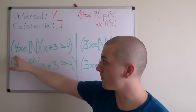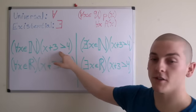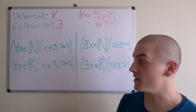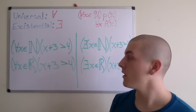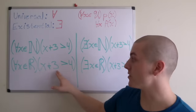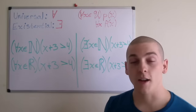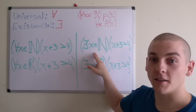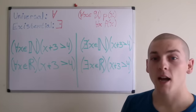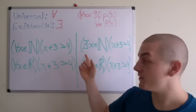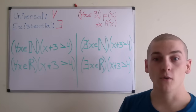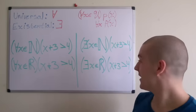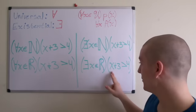So looking at examples: 'for every X that is an element of the naturals, X plus 3 is greater than 4' — that is a false statement because the first value of the natural numbers is 1, and 1 plus 3 equals 4, which is not greater than 4. Also, 'for every X that is an element of the real numbers, X plus 3 is greater than 4' — that is also false, as there are infinitely many numbers for which this is not true. 'There does not exist an X that is an element of the naturals such that X plus 3 is greater than 4' — that is also false, because if I let X equal 2, that is a natural number and 2 plus 3 is greater than 4. 'There exists an element of the real numbers such that X plus 3 is greater than 4' — that is a true statement, because any number greater than 1 will yield a true result.